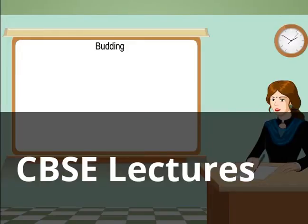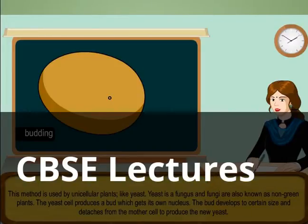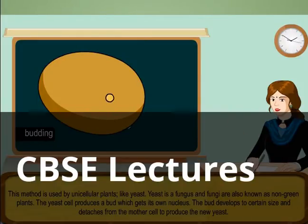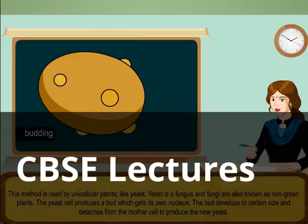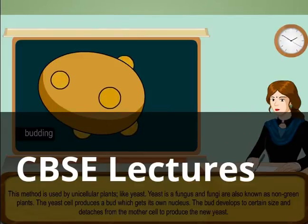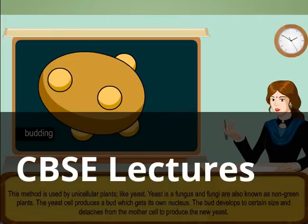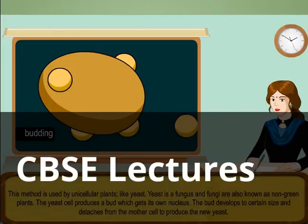Budding. This method is used by unicellular plants, like yeast. Yeast is a fungus, and fungi are also known as non-green plants. The yeast cell produces a bud which gets its own nucleus. The bud develops to a certain size and detaches from the mother cell to produce the new yeast.